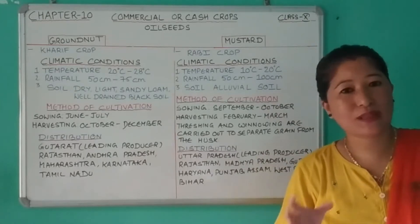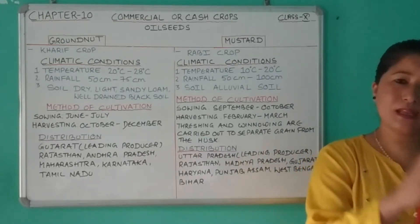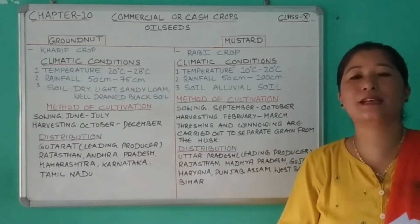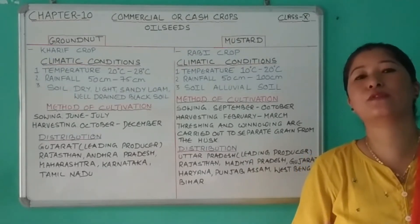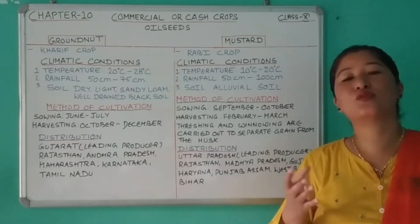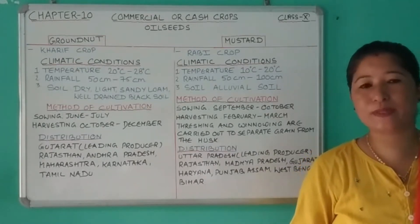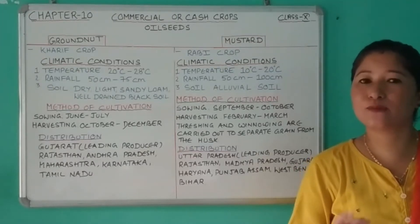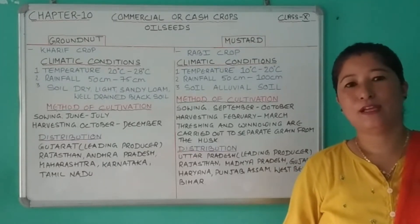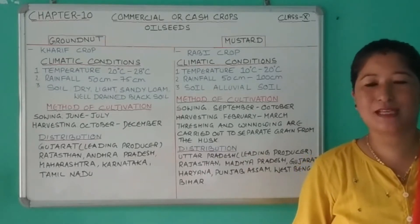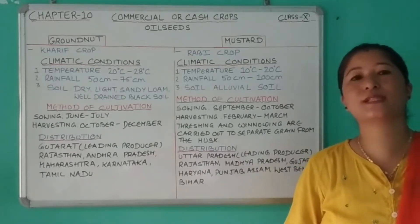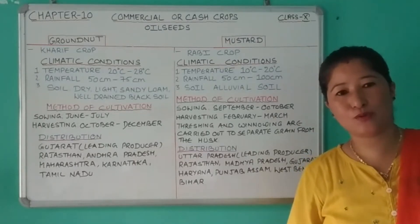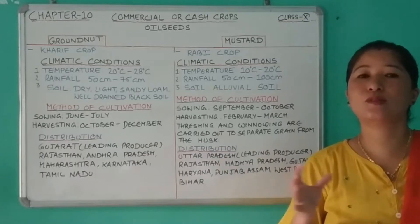Groundnut grows well in tropical and sub-tropical climates. It requires warm coastal areas with light humidity. It is also a drought-resistant crop, meaning it can be grown in areas where rainfall is less. However, frost is dangerous for the crop, and it cannot tolerate prolonged severe drought either.